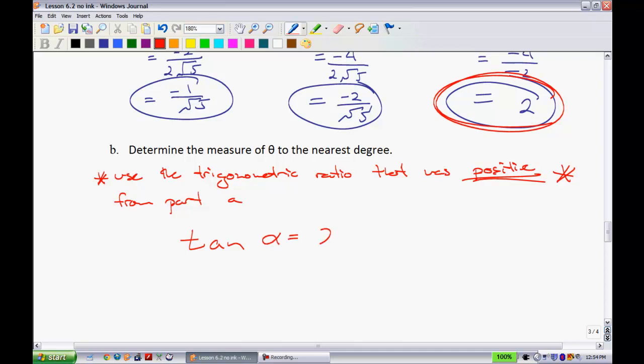Tangent of alpha will end up being equal to 2. If I rearrange for alpha, I get alpha is equal to the tangent inverse. This is how you rearrange, right? You divide by tangent on both sides. It's equal to 2. And you put this into your calculator, you'll find out that alpha is equal to approximately 63 degrees.